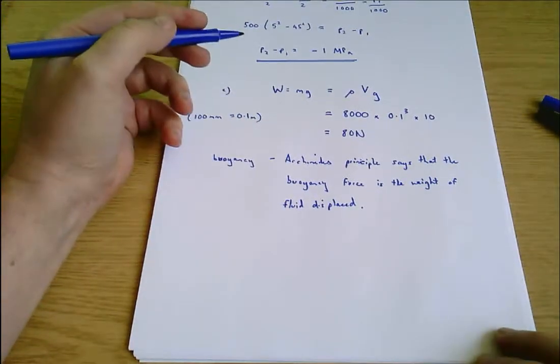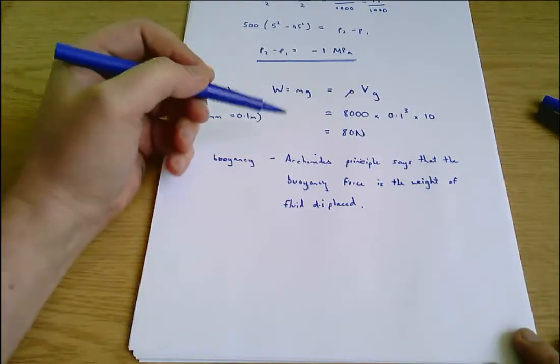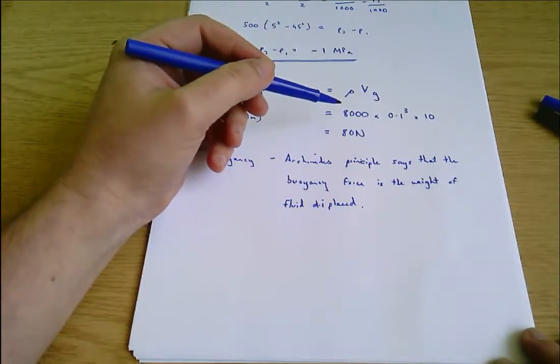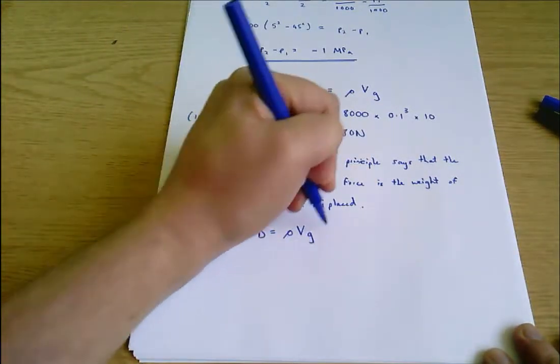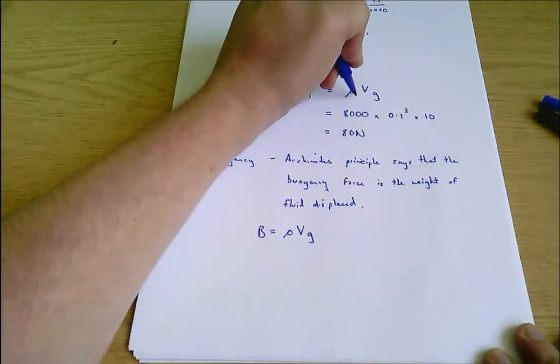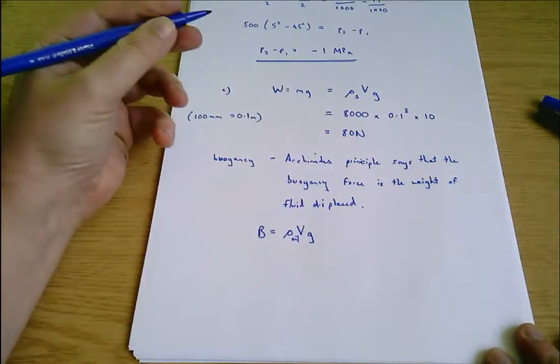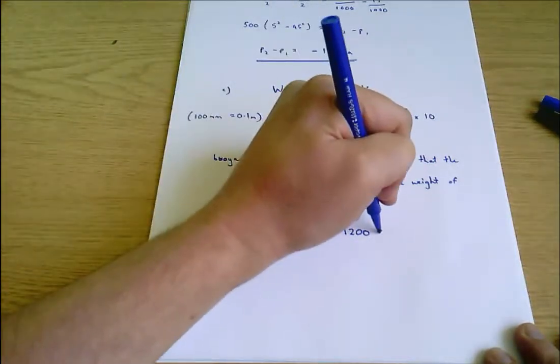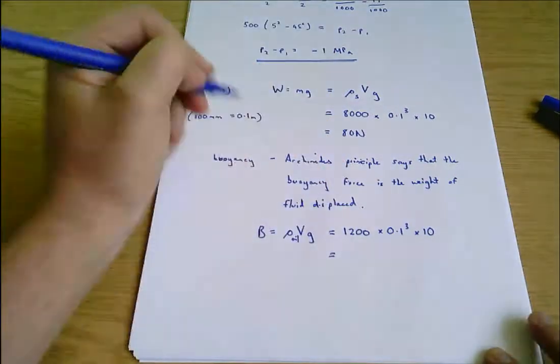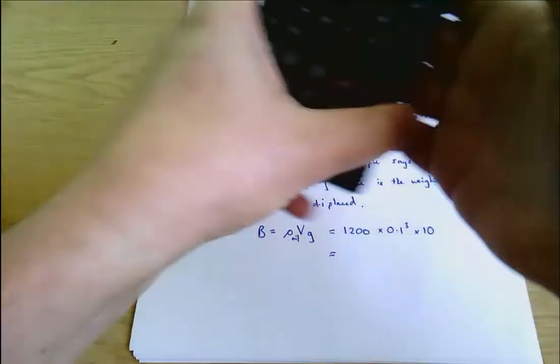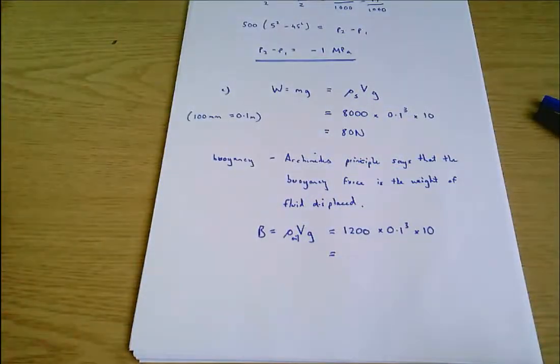So what we need to find, it's the weight of the equivalent volume of fluid. The volume that's been displaced is the volume of the cube. But we need to use the density of the oil here. So buoyancy equals ρVg. Where this, I'll make a note, this is ρ steel and this is now ρ oil, the density of oil. And we're given that in the question. So the buoyancy is 1200 times 0.1 cubed times 10, which is going to equal 12 newtons.